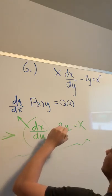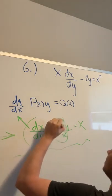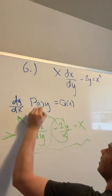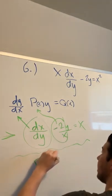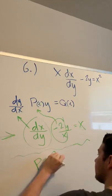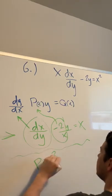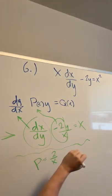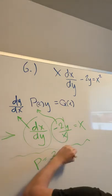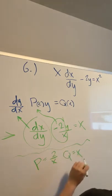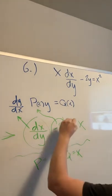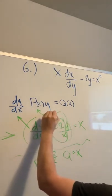Our P is going to be negative 2 over x, and our Q is going to be just x, and from that we can see everything is lined up appropriately.